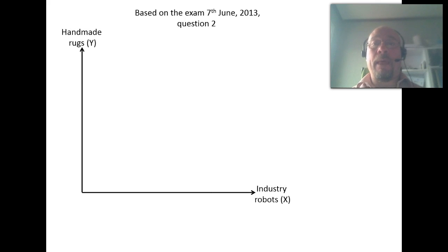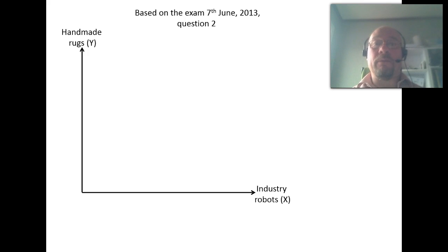Since the name 'handmade rugs' makes it rather obvious that that good should be labor-intensive, we can make the assumption that the capital-intensive good would be industry robots, based on the fact that we normally use industry robots to produce more industry robots.